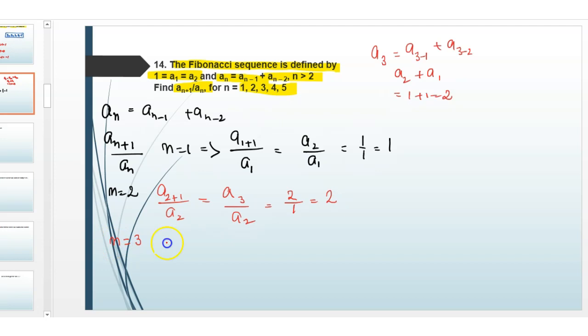For N equals 3, A4 divided by A3. The value of A4 is A3 plus A2. A3 is 2 and A2 is 1, so this is 3. Then 3 divided by 2.